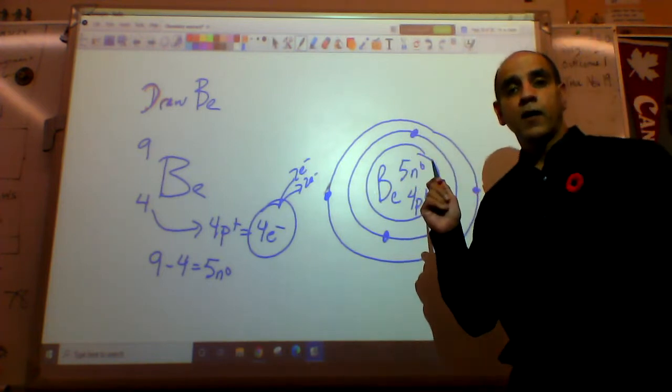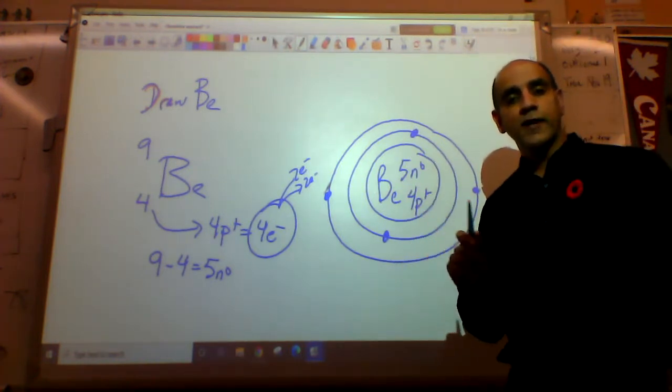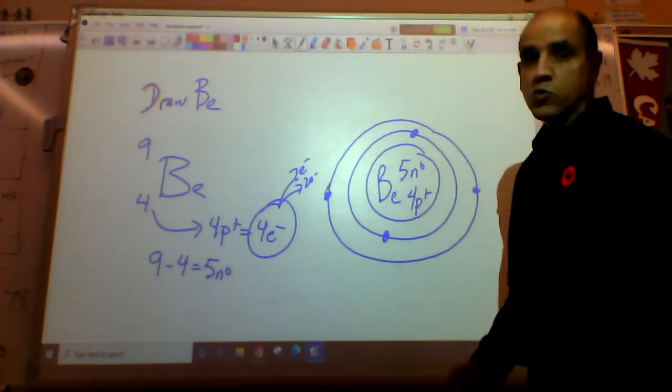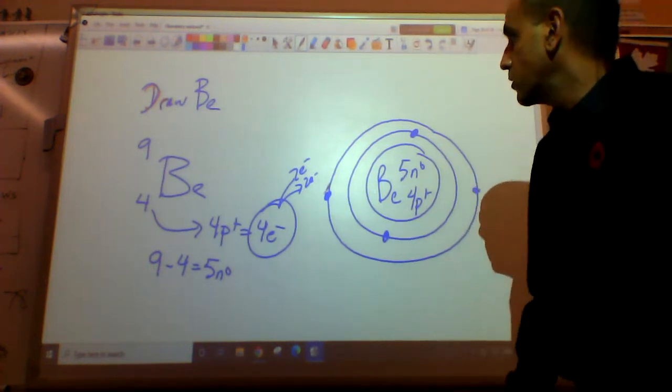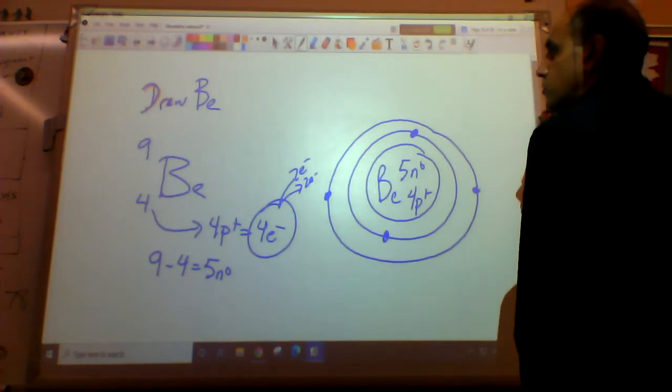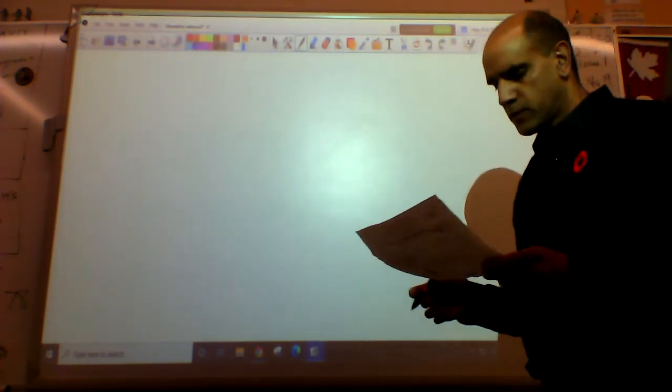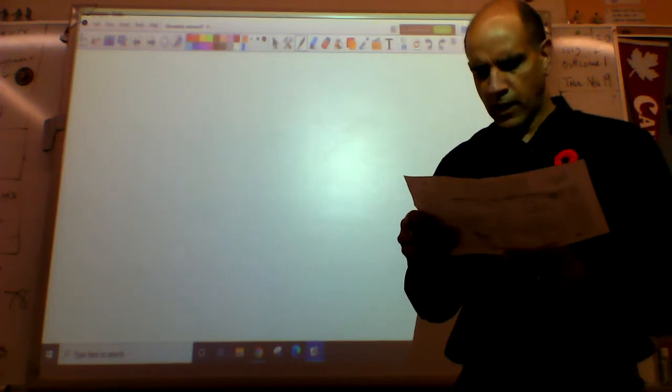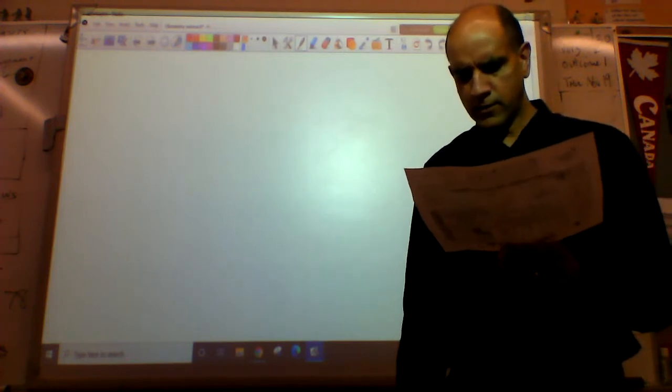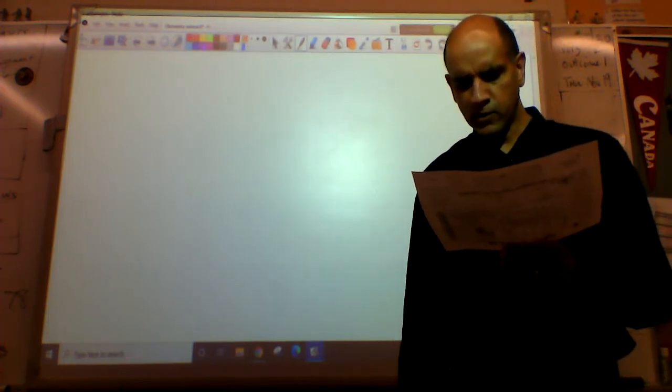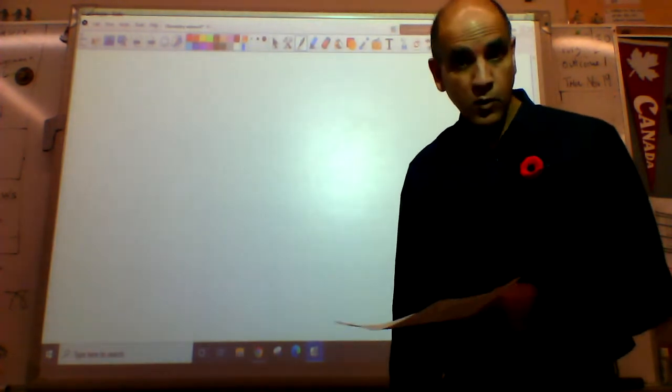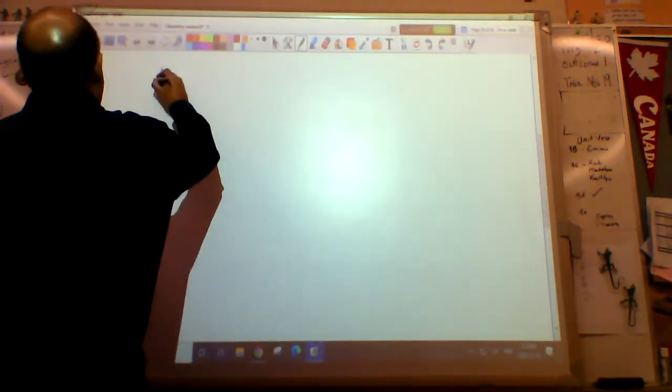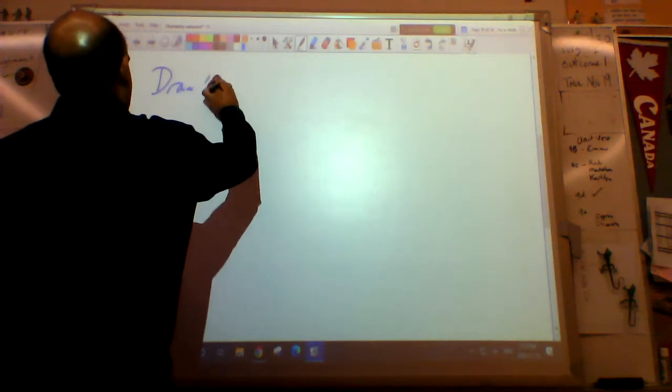You now know about the families. You also now know about how to figure out protons, neutrons, electrons, and you know how to draw the atoms as well. We have time to do one more. Let's do a non-metal of interest. Chlorine would be a tough one, let's try this.